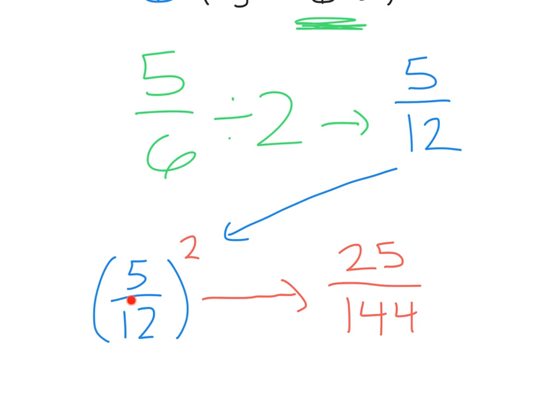Squaring that 5/12ths, that's 5 over 12 times 5 over 12, we get 25 over 144. And as messy as it is, this is what we want to add to both sides.